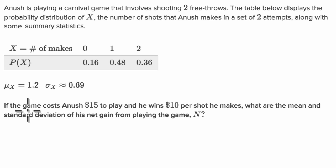Then they tell us if the game costs Anoush $15 to play and he wins $10 per shot he makes, what are the mean and standard deviation of his net gain from playing the game N?